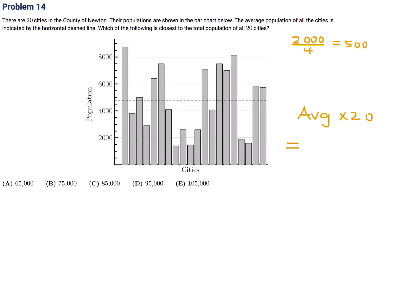The scale goes up by 500, so the markings are 4,500 and 5,000. The dashed line looks like it's right between those two, so the average is approximately 4,750. Multiplying 4,750 by 20 gives 95,000. So number 14, the answer is D.